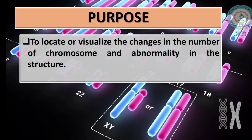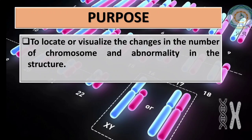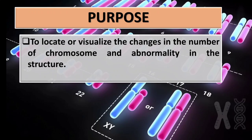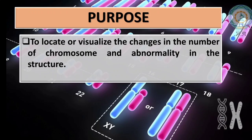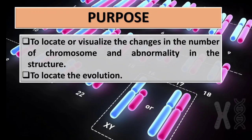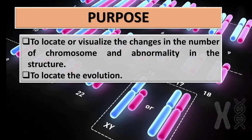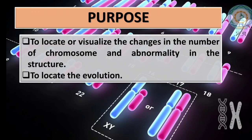Karyotyping is also used to study abnormalities in the structure of chromosomes. If any abnormality is present in the structure of a chromosome, you can easily study it with the help of karyotyping. It is also used to locate evolutionary changes.